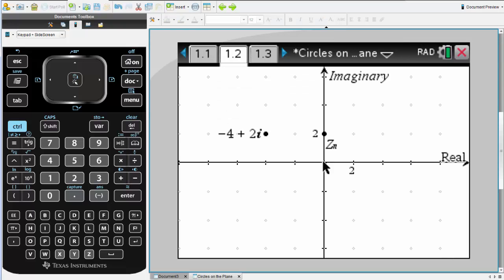I've drawn this diagram on a calculator application. We can see the point minus 4 plus 2i and some point zn, which is 4 units away. A point that satisfies that condition is on the imaginary axis at 2. But there are lots of other points, as we can see.